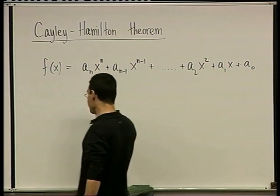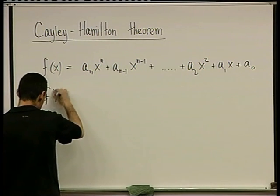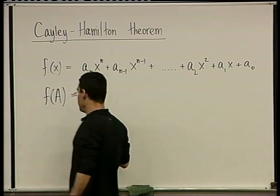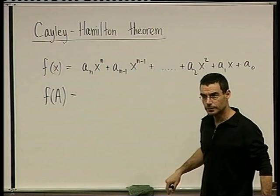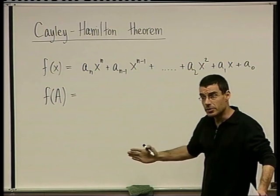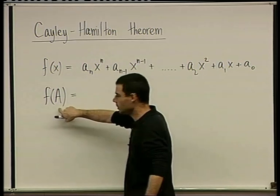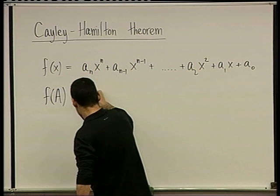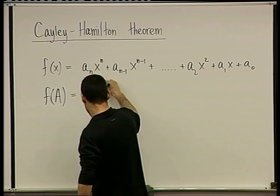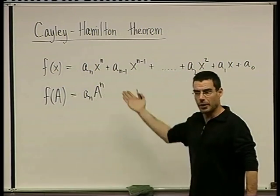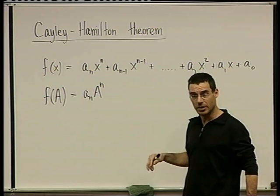What does it mean — and this is in fact the definition — what does it mean to substitute a matrix into a polynomial? It just means, by definition, that whenever you see x, you plug in the matrix. So it's a_n times A to the power n. And we know how to raise a matrix to the power n — it's just A times A times A, n times.